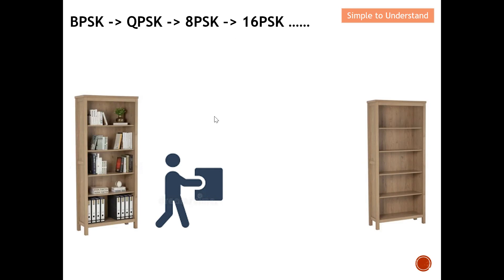Let me give you a very simple scenario to understand the different levels of PSK. Imagine you are tasked to move books from the left shelf all the way to the right shelf. On the left there are lots of books; on the right the shelf is empty. You are tasked to move the books from left to right — this is analogous to doing a data transfer. So you start by taking one book and moving it to the right, meaning one bit of data is transferred.